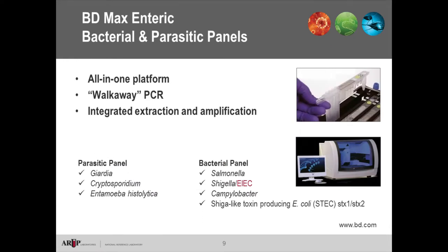BD MAX has enteric bacterial and parasitic panels — two separate panels run on the same instrument. This is an all-in-one, walk-away platform: once you load the primary specimen, all subsequent steps including extraction, amplification, and result output are performed by the instrument. The parasitic panel includes Giardia, Cryptosporidium, and Entamoeba histolytica, and the bacterial panel is the same as Prodessa.